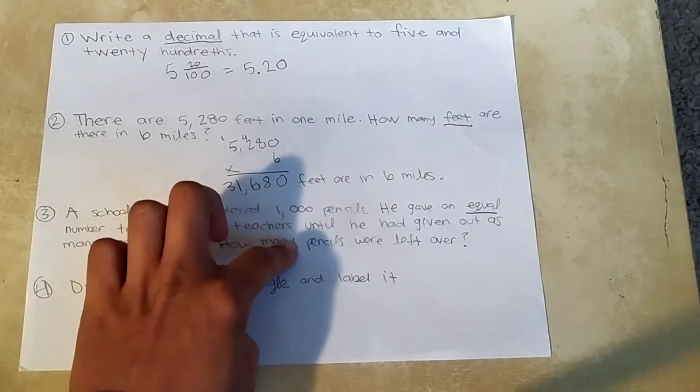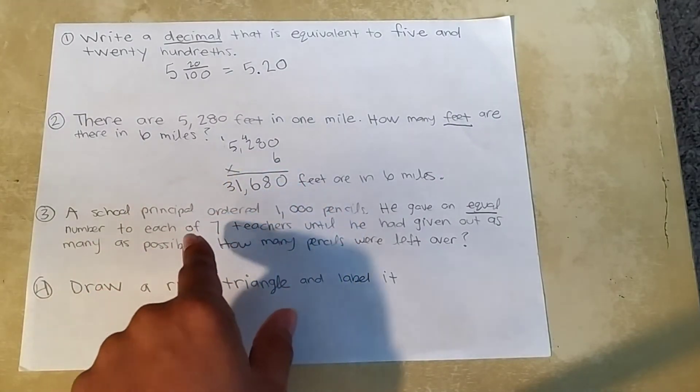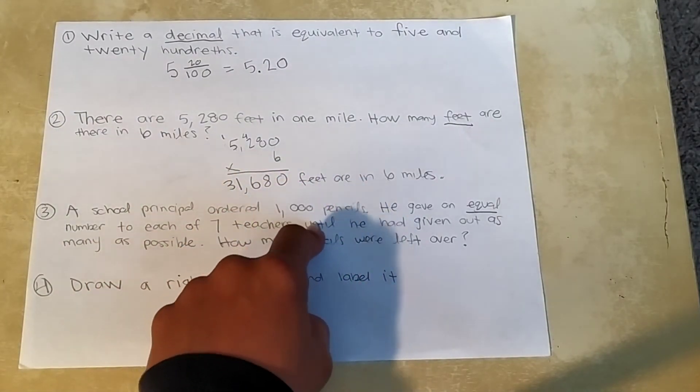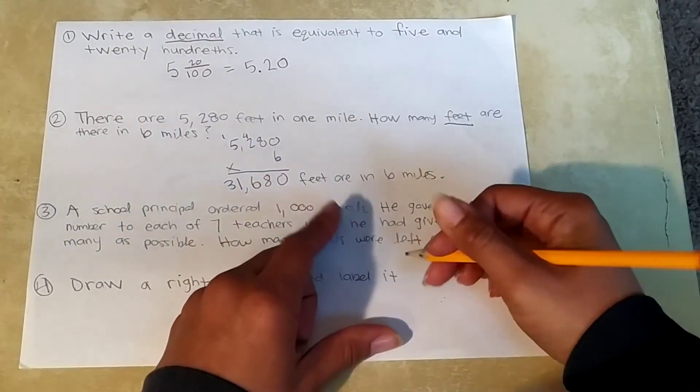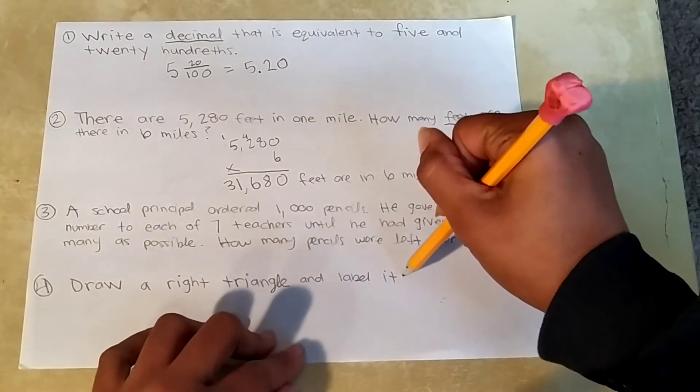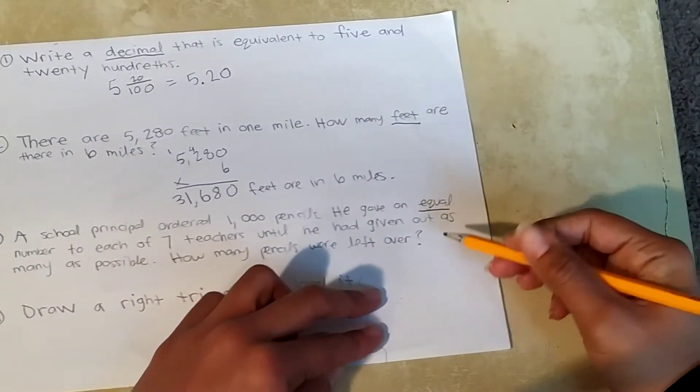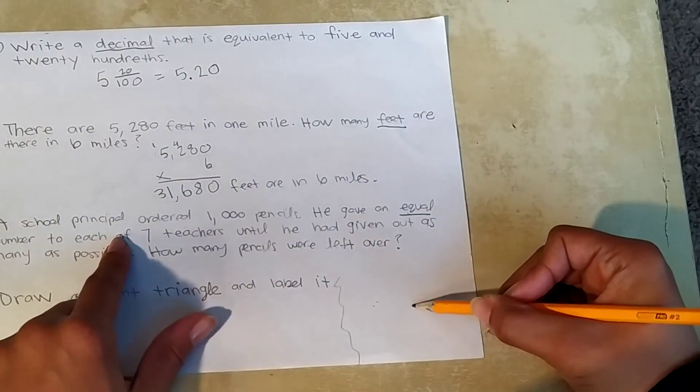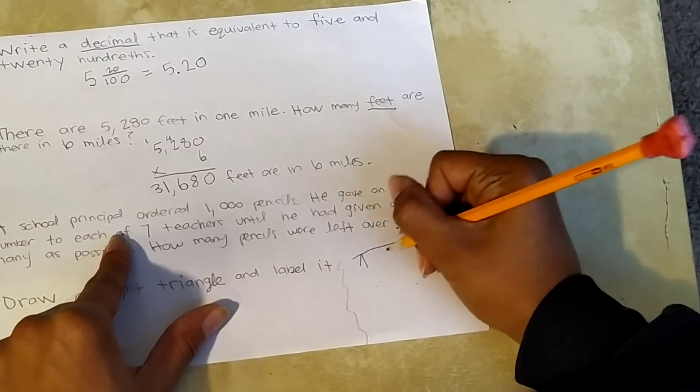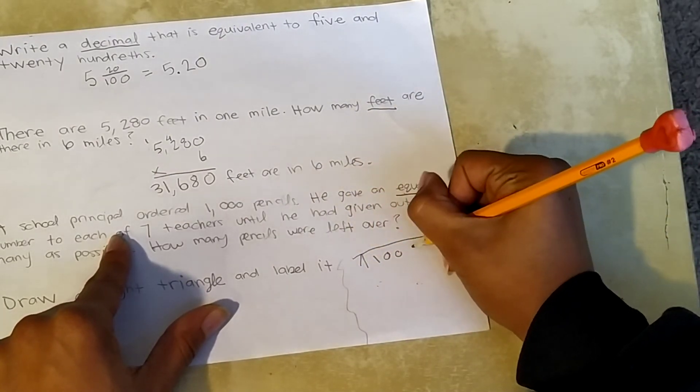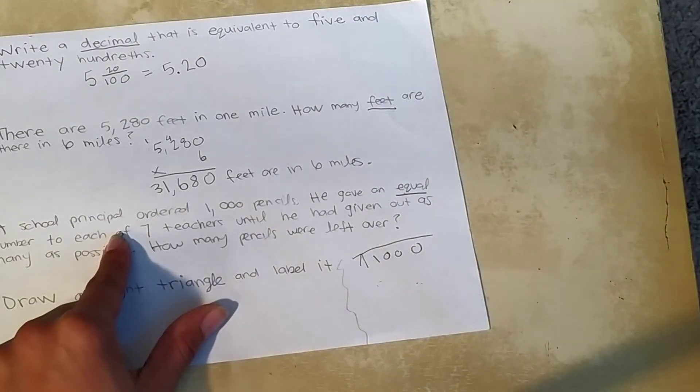So are we going to multiply or are we going to divide? We are going to divide. So let's see how many equal groups of seven can we get out of 1,000? Okay, I'm actually going to do this problem down here, right here because I ran out of room. So seven goes into 1,000.